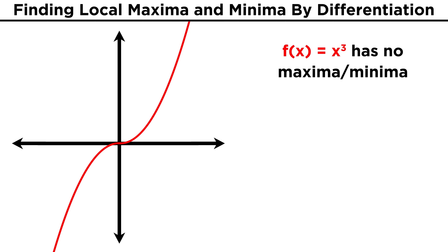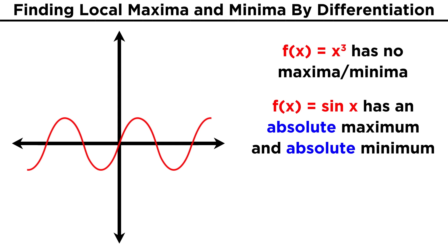Of course, some functions have no maxima or minima. Take x cubed for example. This function is constantly increasing as we move left to right, from negative infinity to positive infinity, so there are no maxima or minima to speak of.